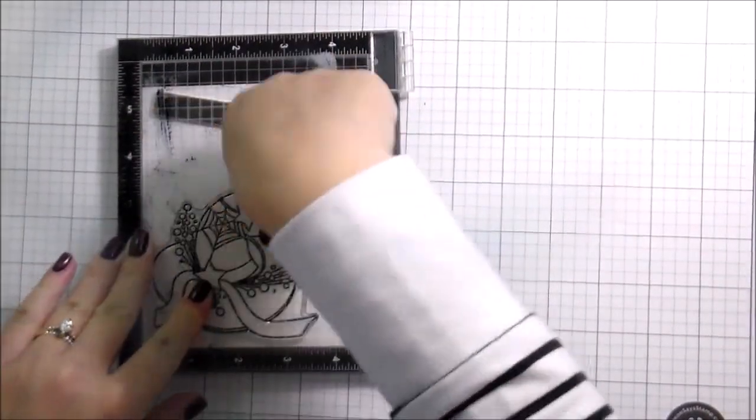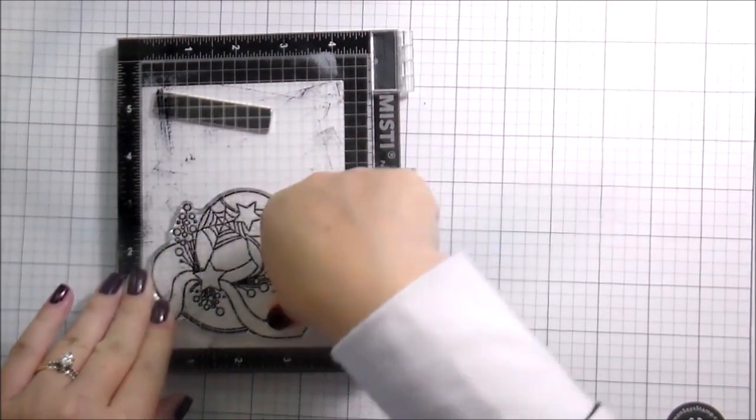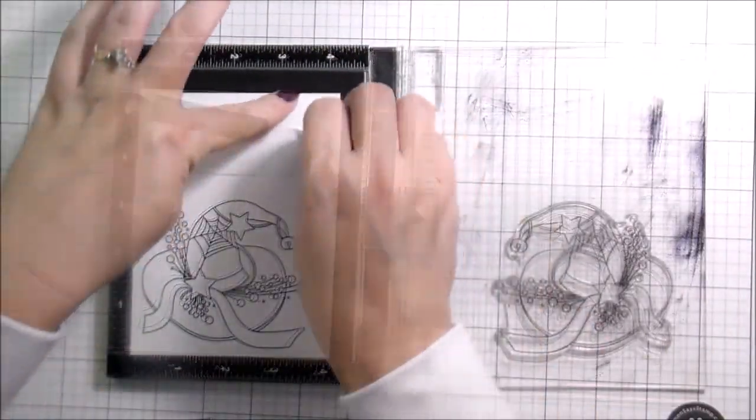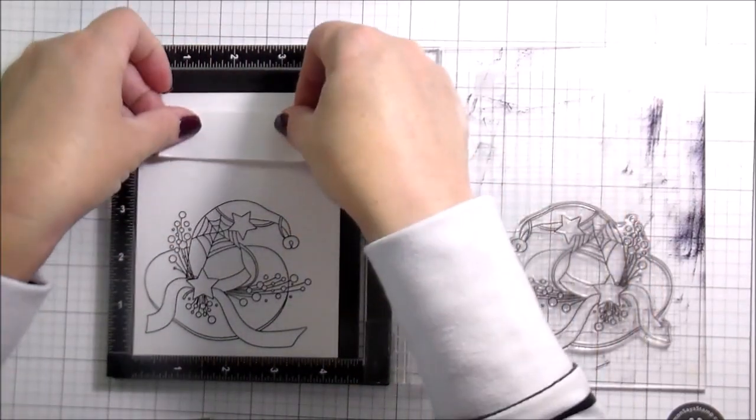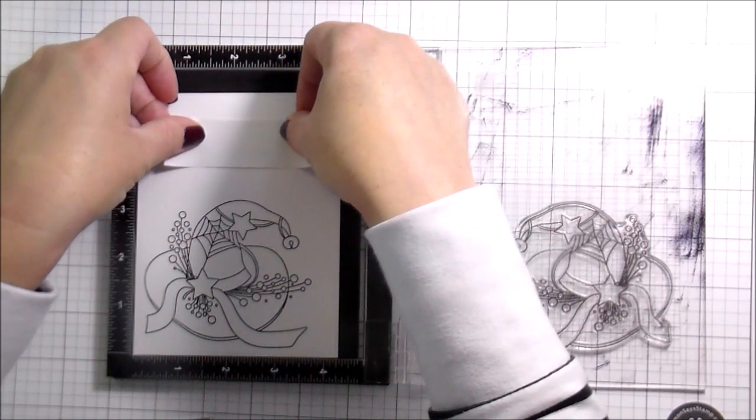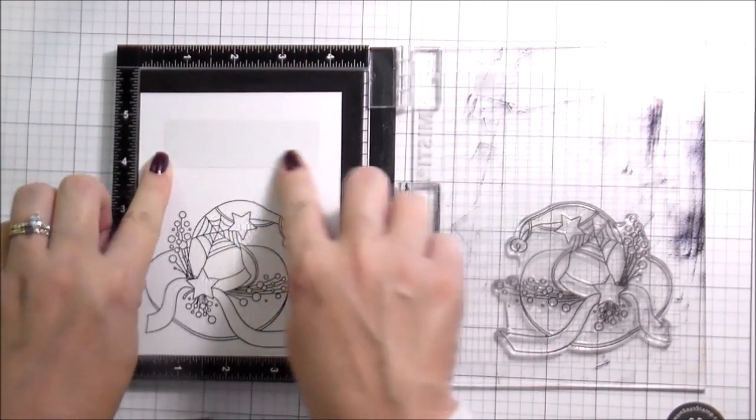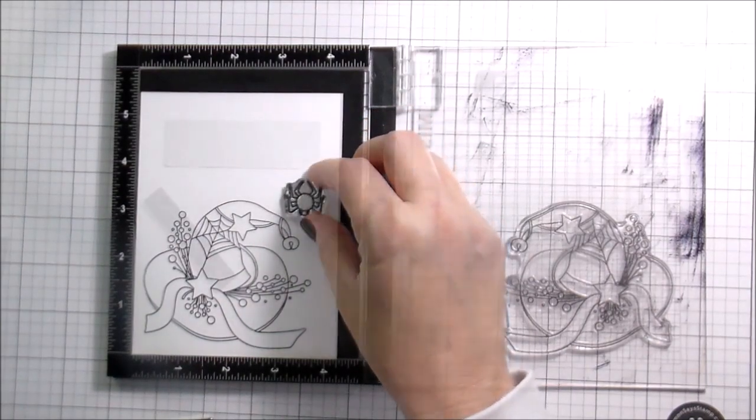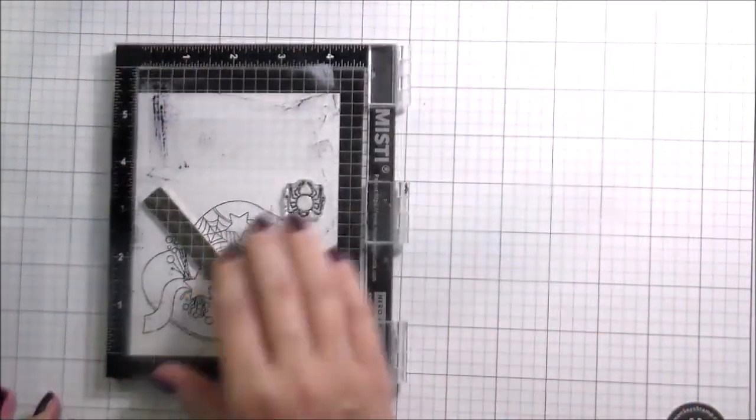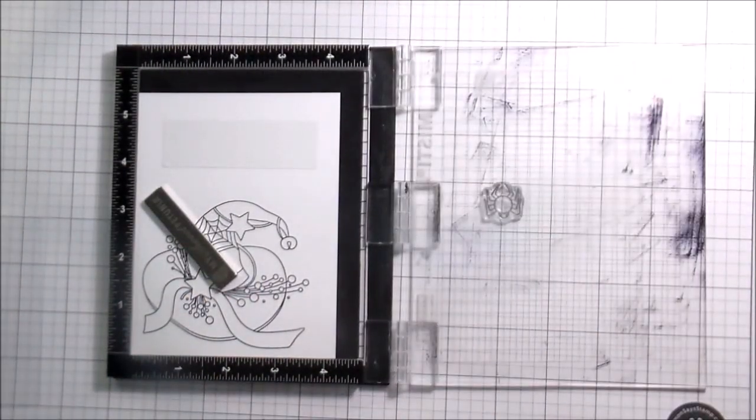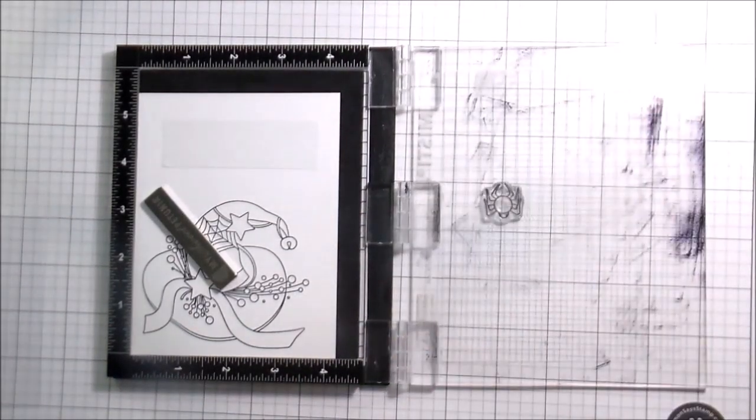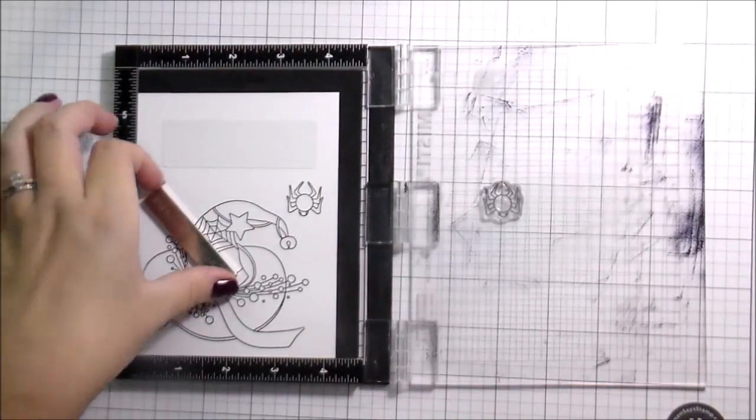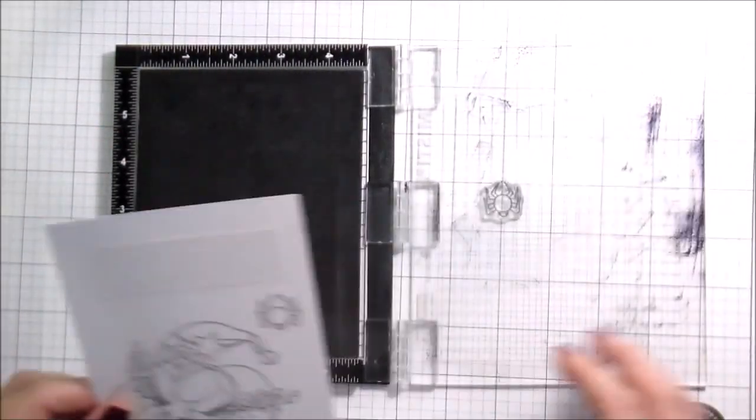So again, we're just stamping using Copic Safe ink because that's what I'm going to be coloring with. And then the sentiment, I have these little strips of masking paper. And I believe I used my post-it note masking paper for those, just because it already has straight lines. And then this spider is actually from the Right Shoes set.